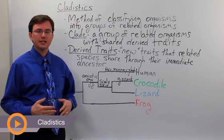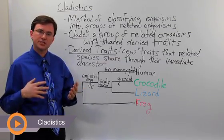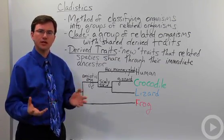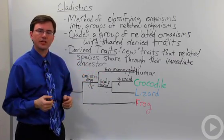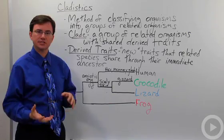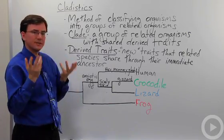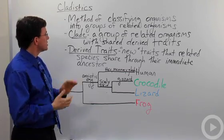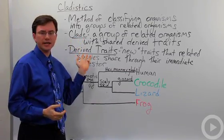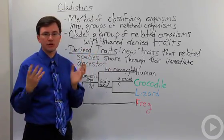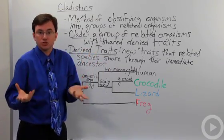Cladistics is a method scientists use to determine which organisms are most closely related. It's a way of grouping organisms based on derived characteristics, which are types of characteristics unique to a particular group. A clade is a group of related organisms that all share derived traits.